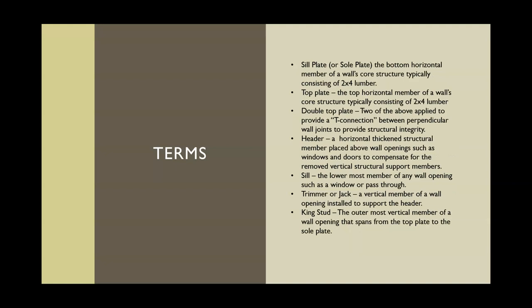A stud is the vertical member of a wall's core structure, often consisting of a two by four piece of lumber — and remember, two by four is in name only. A sole plate, or seal plate, is the bottom horizontal member of the wall frame. A top plate is the top horizontal member of the core structure, also typically two by four. A double top plate simply means two top plates.